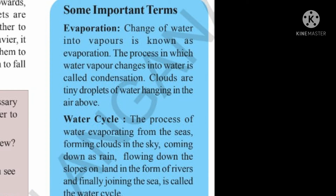Let us know about some important terms. What is evaporation? The change of water into vapors is known as evaporation. The process in which water vapors change into water is called condensation. When the water vapors are changing into water, it is called condensation. Clouds are tiny droplets of water hanging in the air above. So, the opposite of evaporation is called condensation.